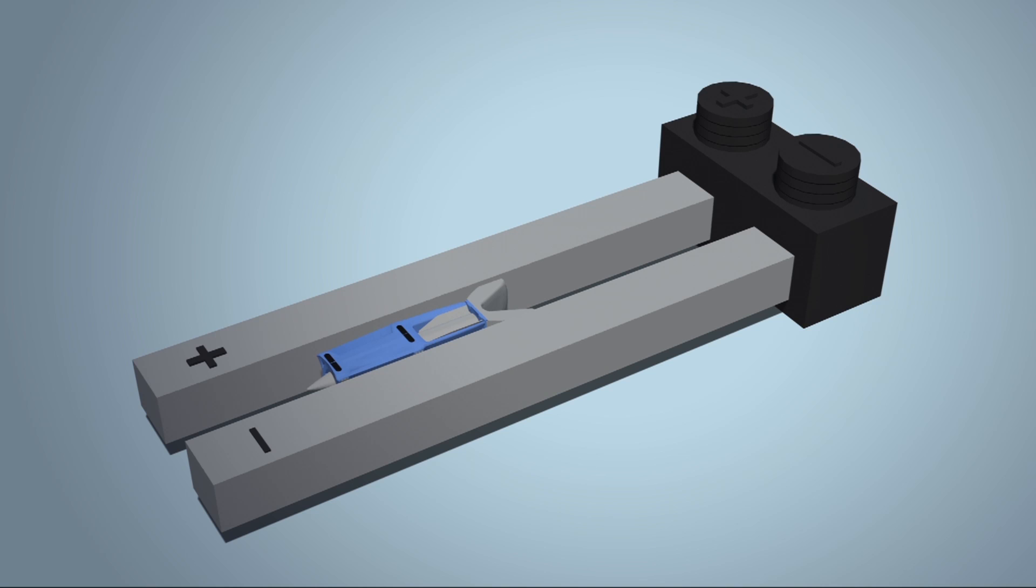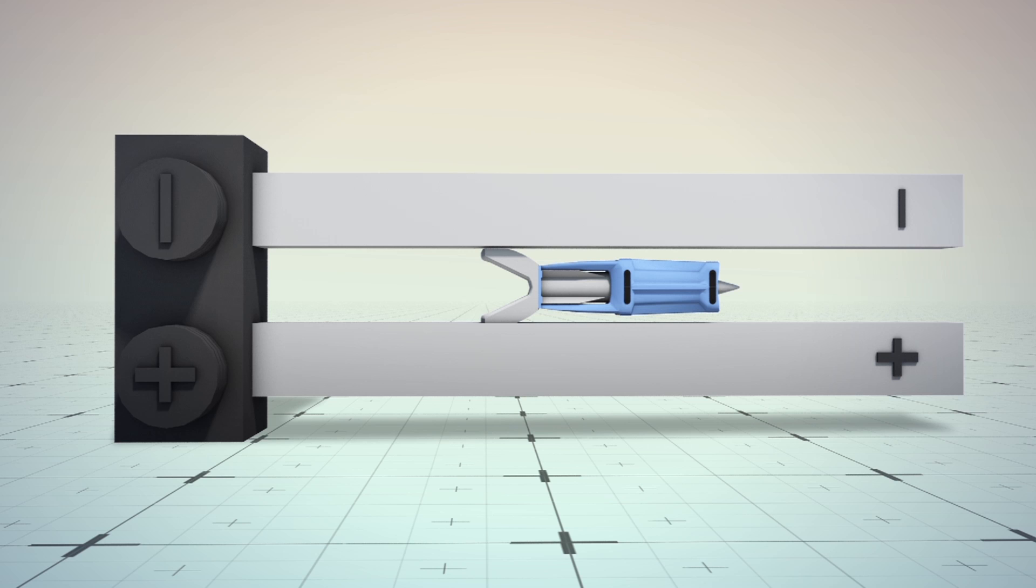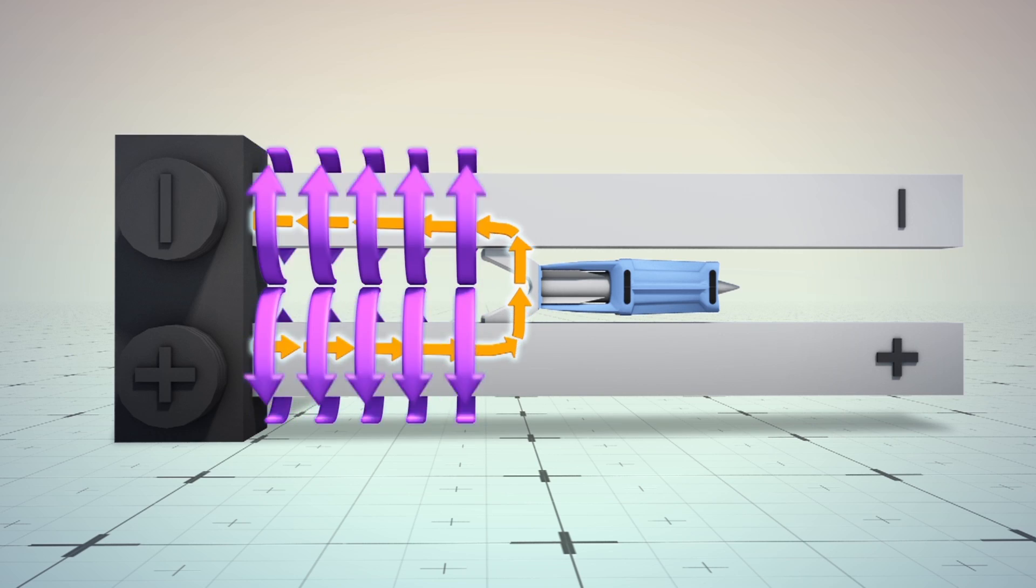An electrical pulse is sent from the positive terminal of the power supply, up the positive rail, across the armature, and down the negative rail, back to the power supply. The loop induces a magnetic field around each rail that pushes on the projectile. This force is the Lorentz force.